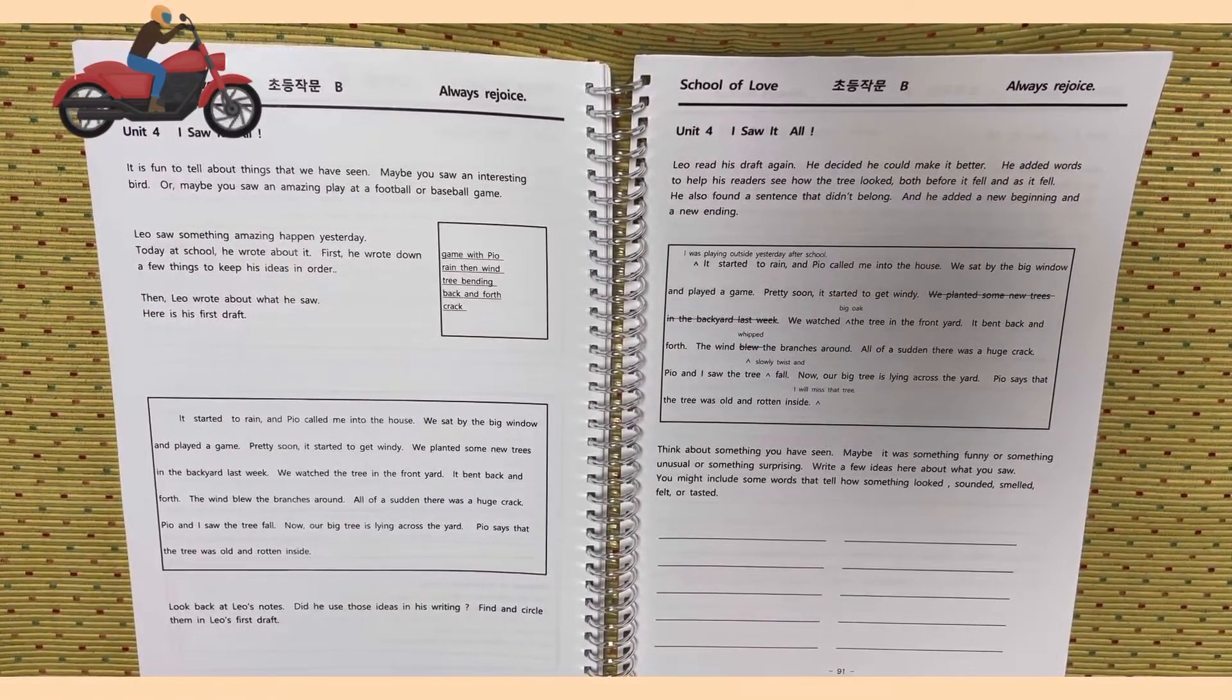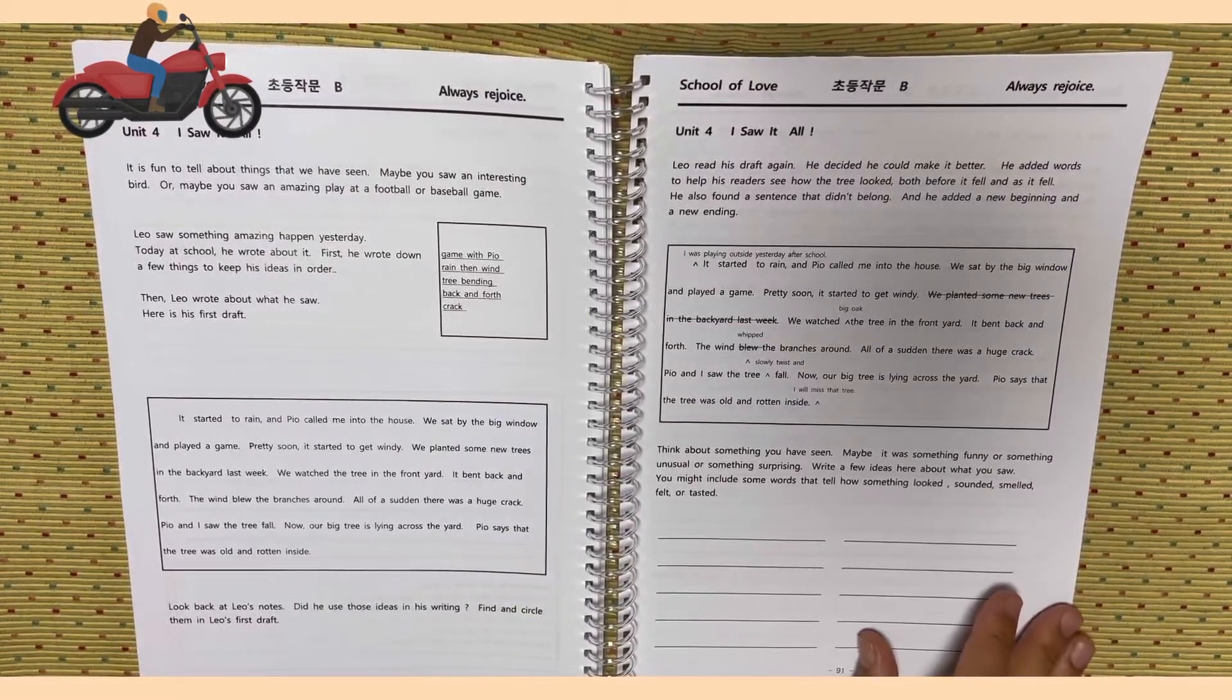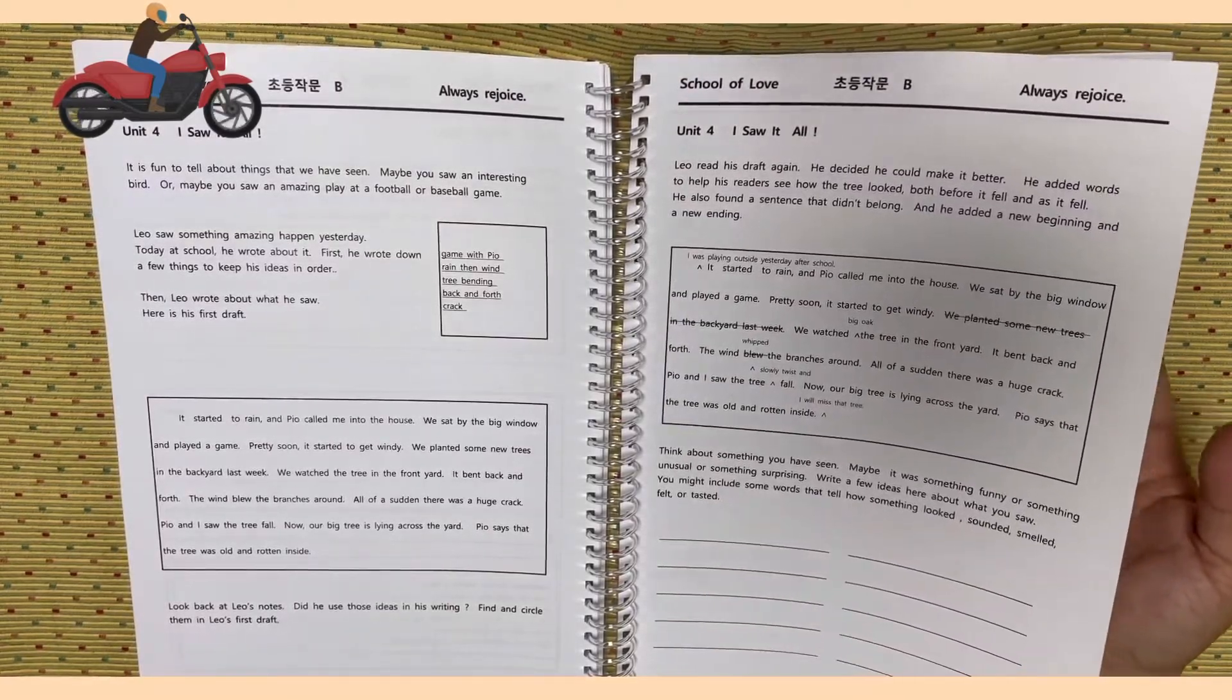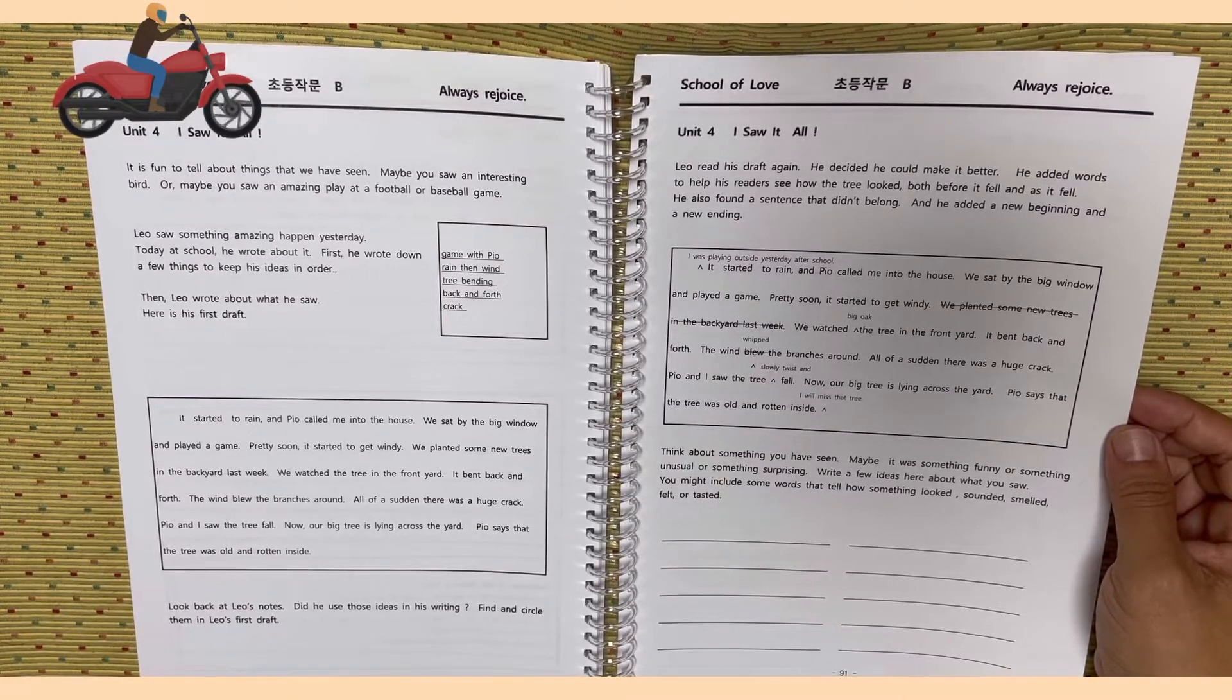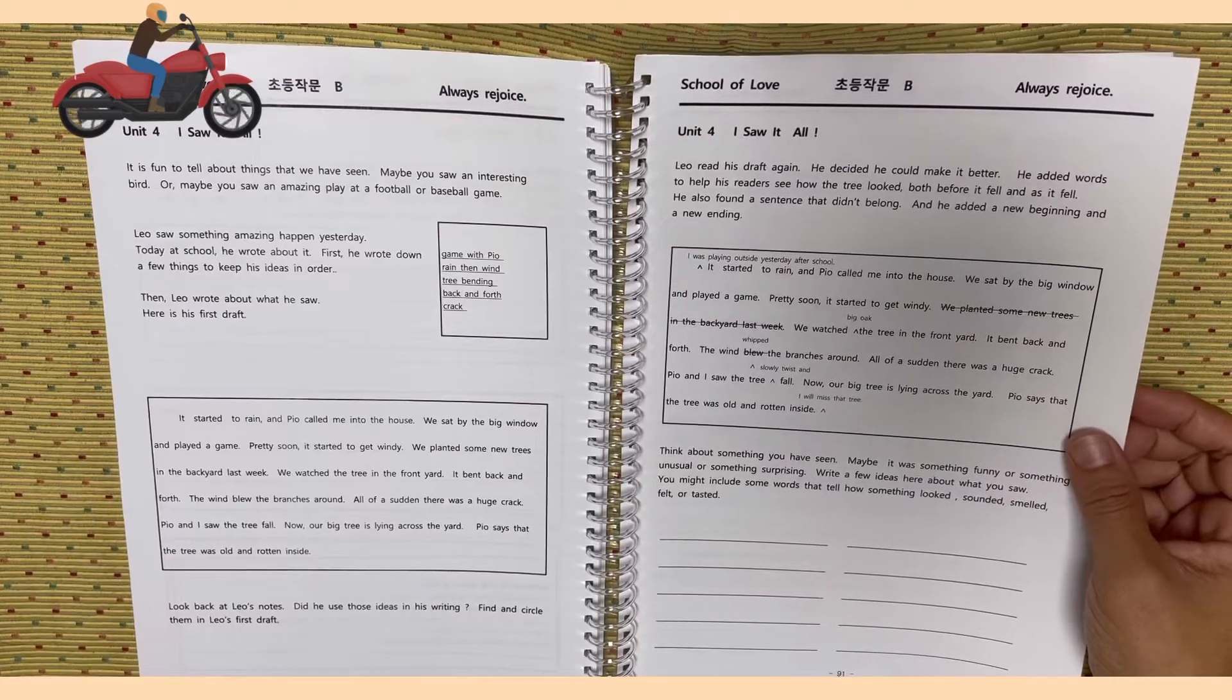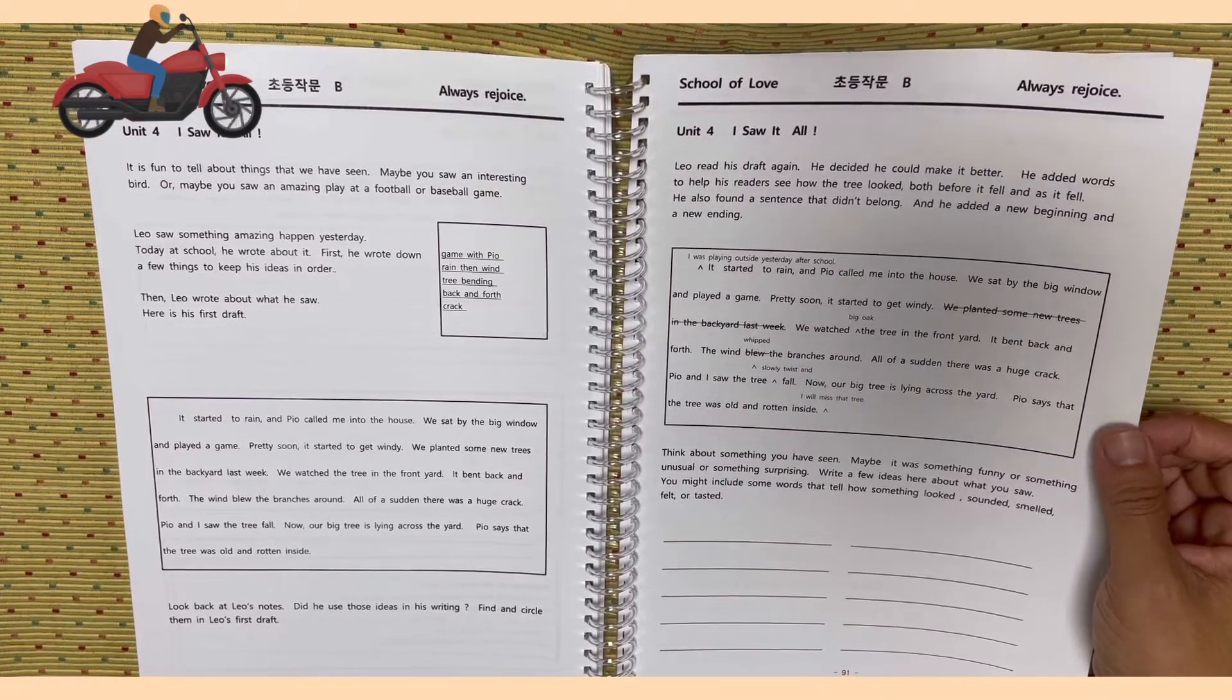We watched the tree in the front yard. It bent back and forth. The wind whipped the branches around. All of a sudden, there was a huge crack. Pio and I saw the tree fall. Now, our big tree is lying across the yard. Pio says that the tree was old and rotten inside. And I will miss that tree.